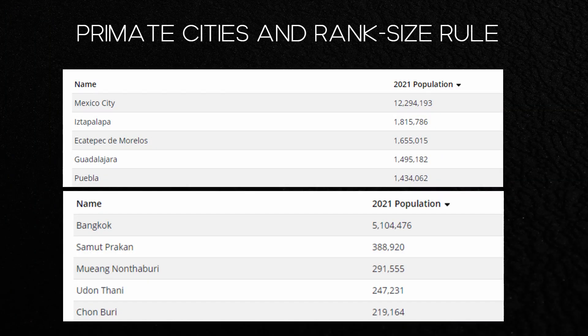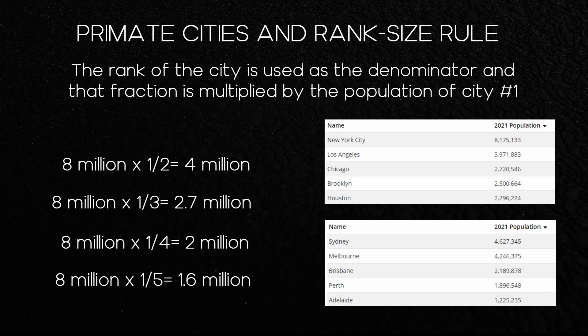Two other concepts for this unit are primate cities and rank size rule. A primate city is a city that dominates both the politics and population of a country — for example, Mexico City with a population of 12 million, which then drops off significantly. Rank size rule states that the rank of the city is used as the denominator, and that fraction is multiplied by the population of city number one. For example, in the United States, New York has 8 million; multiply by one-half and you get 4 million, which is close to Los Angeles. There are exceptions — Australia doesn't perfectly fit, but can still be considered a rank size rule country.